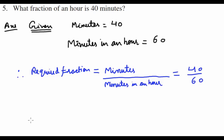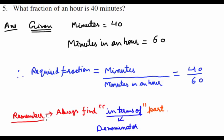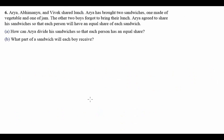Remember to always find in terms of the part that goes to the denominator. Here we have 60 and we know from the question it is a fraction of an hour in terms of minutes, therefore we converted the hour into minutes and that went to the denominator. So 40 over 60 is your answer.